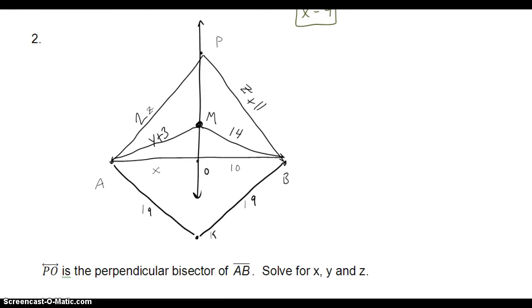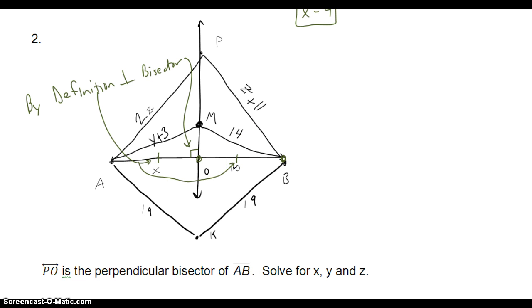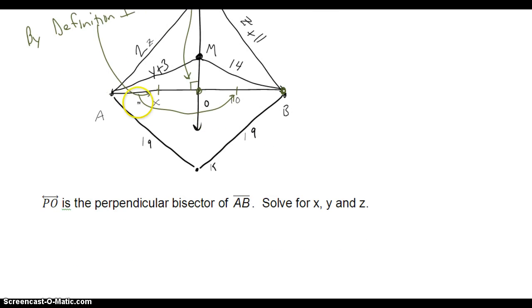The second example: line PO is the perpendicular bisector of segment AB. So I know some things are true in this picture. By the definition of a perpendicular bisector, I know that I have perpendicular segments, and I also know by definition that AB is being bisected. Since these two are the same length, I can set up my first equation: this length, x, has to equal this length, 10. So x equals 10.